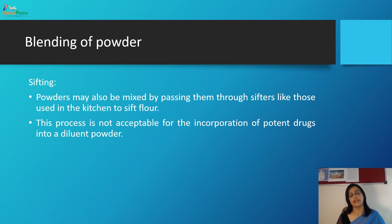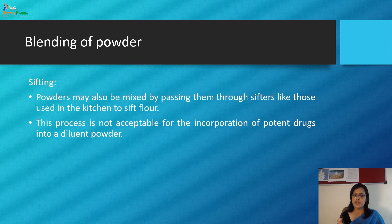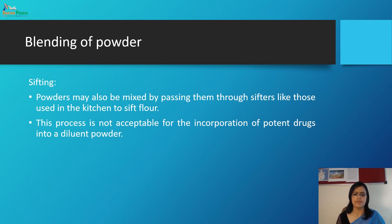The third method is sifting. Powders may also be mixed by passing them through a sifter — similar to the sifter used in a kitchen to sift flour. However, this process is not acceptable for incorporation of a potent substance into a diluent powder.